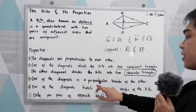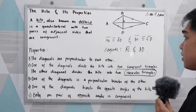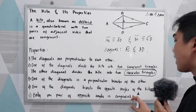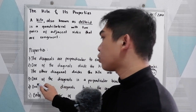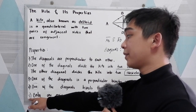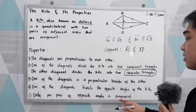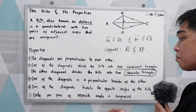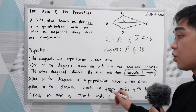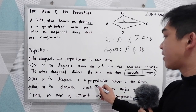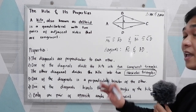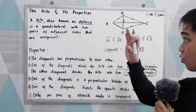One of the diagonals is a perpendicular bisector of the other. One of the diagonals bisects the opposite angles of the kite. This is related to property five: only one pair of opposite angles is congruent, and one of the diagonals bisects those congruent angles, dividing each into two congruent angles.